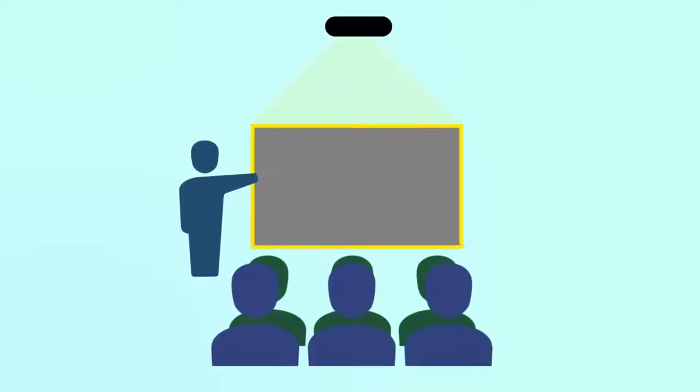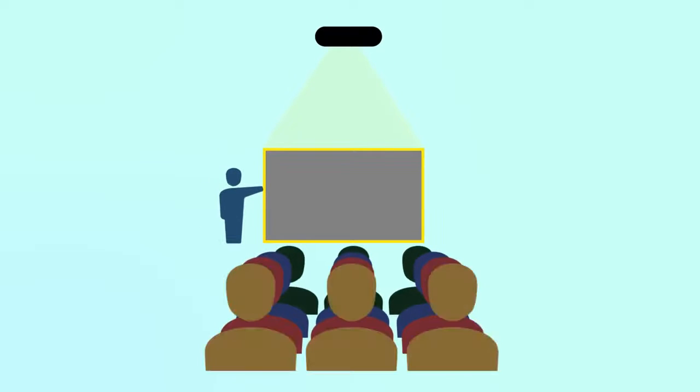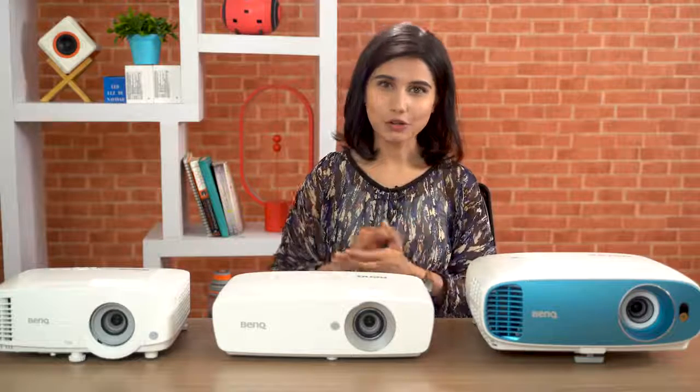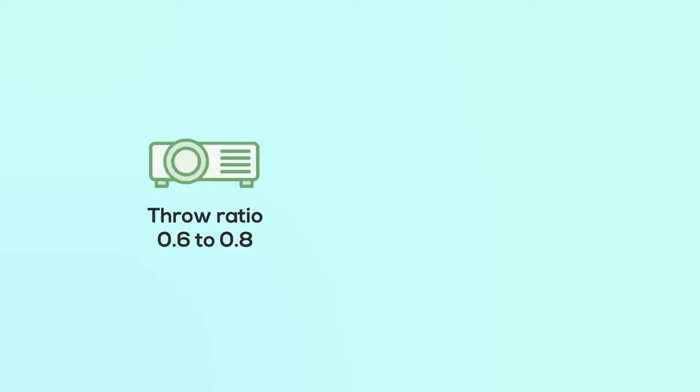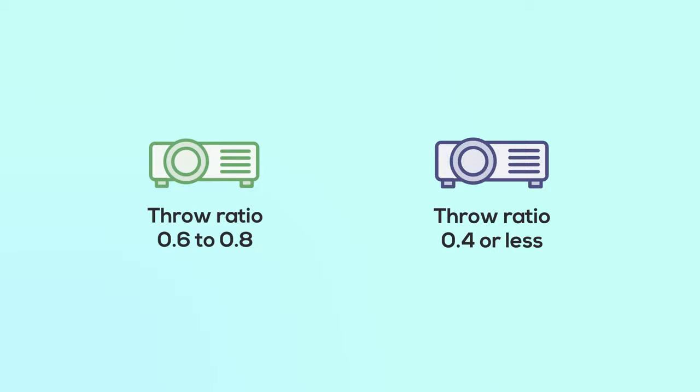A long throw projector would be a fine choice if you have to install a projector in large classrooms. Just look at the throw ratio on the spec sheet — if the throw ratio is less than one, it is a short throw projector; otherwise it's a long throw projector. Usually, short throw projectors come with a throw ratio of 0.6 to 0.8. But if you are looking for an ultra short throw projector, you should look for a throw ratio of 0.4 or less.